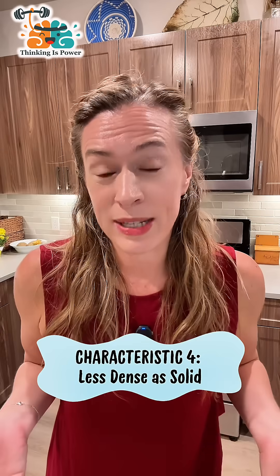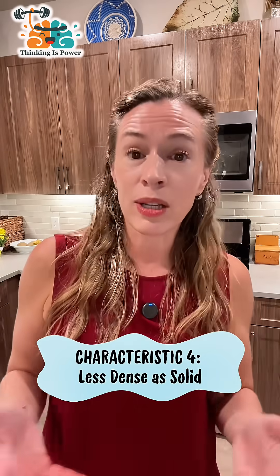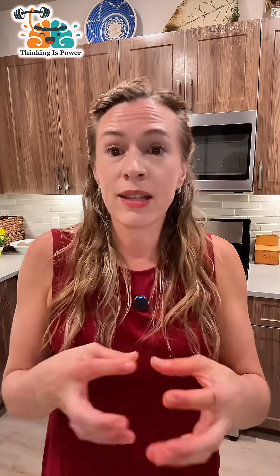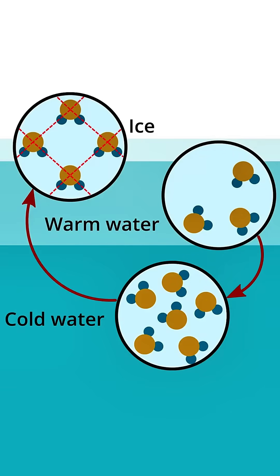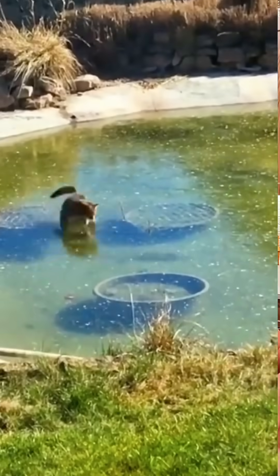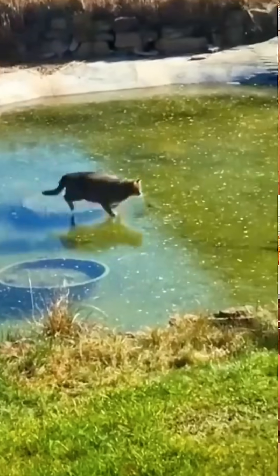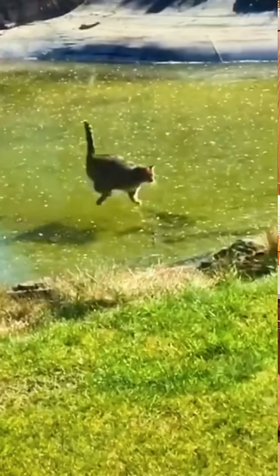Water expands when it freezes because the molecules lock into an open lattice. This is why pipes burst when they freeze. It's also why ice floats. If frozen water sank, lakes would freeze from the bottom up. Floating ice insulates everything under it.